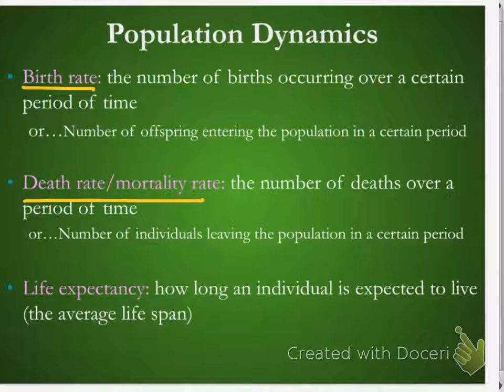Birth rate, everybody gets that—number of births that occur over a certain period of time, how many offspring come into the population. And the death rate is just the number of deaths. We usually use per year with most species—how many are born per year, how many die per year.